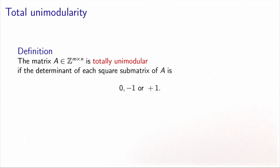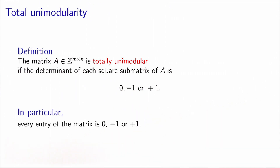This is where the concept of total unimodularity comes into the picture. To define total unimodularity, we note that the basis matrix B is a square submatrix of A. We define total unimodularity of a matrix A of m rows and n columns containing only integers: A is totally unimodular if each square submatrix of A has a determinant which is 0, minus 1, or plus 1. In particular, each entry is a square submatrix of size 1, so each entry of the matrix must be 0, minus 1, or plus 1.